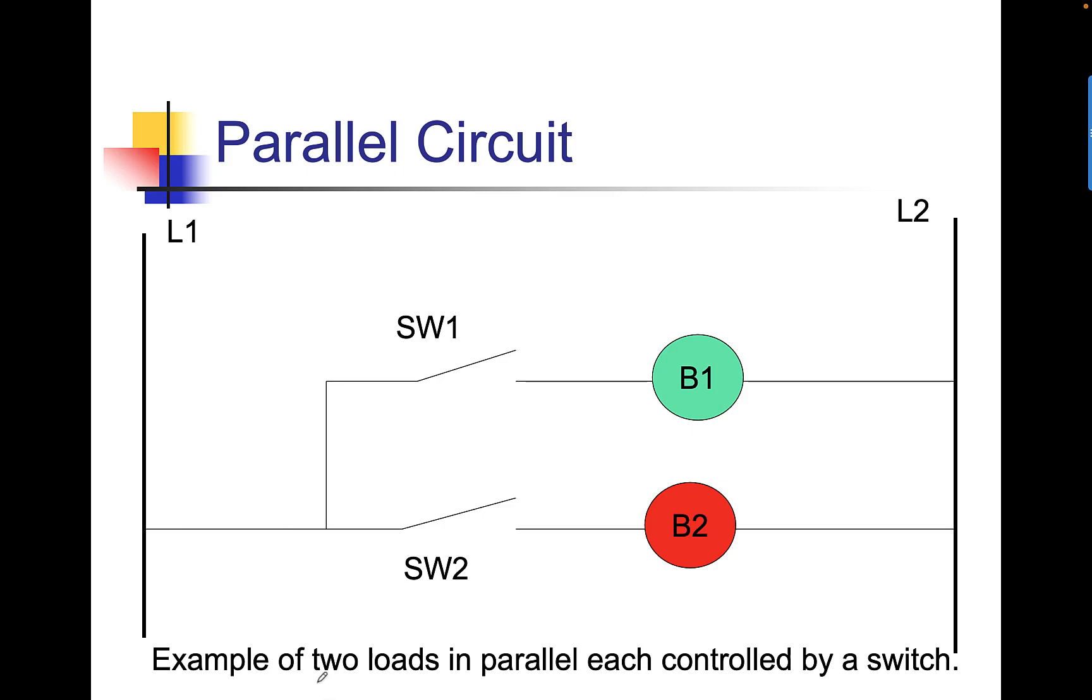Here, I have two loads in parallel, each controlled by switch. Again, switch one closes, bulb one is getting full source voltage. Switch two closes, bulb two is getting full source voltage. They're independent of each other. If bulb one burns out, bulb two is still going to work.